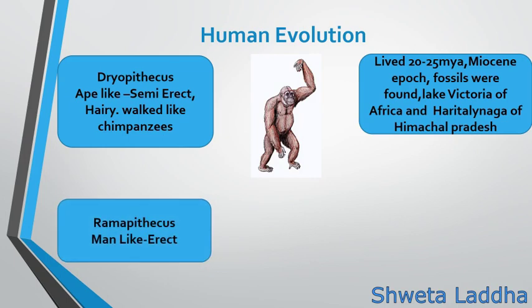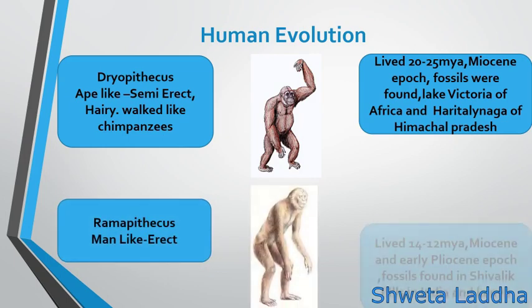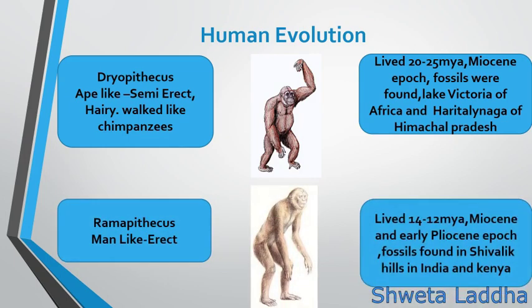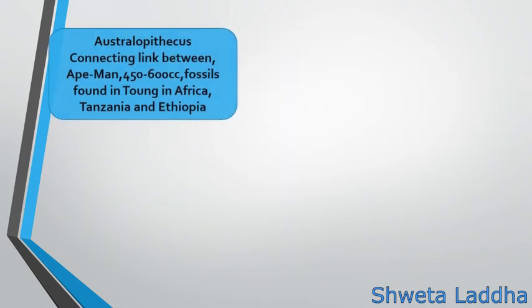After Dryopithecus came Ramapithecus, who were more man-like. They started walking erect and lived somewhere between 12 to 14 million years ago during the Miocene and early Pliocene epoch. Fossils are found in the Shivalik Hills of India and Kenya. They are also called Shivapithecus — Ramapithecus and Shivapithecus are one and the same.